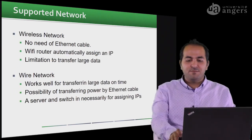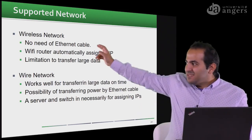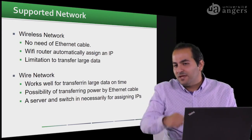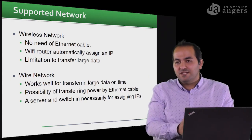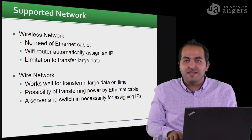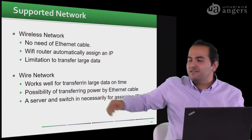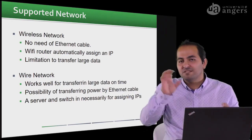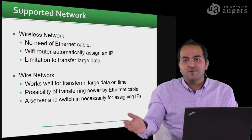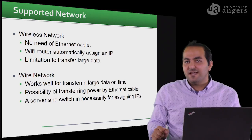Before going further, I want to briefly mention wireless versus wired network options for Raspberry Pi deployments. These are two approaches we can consider. If you have one, two, three, or up to ten Raspberry Pis in your greenhouse or growth chamber, you can use either wireless or wired network without any problem. However, if you are installing a hundred or two hundred Raspberry Pis with cameras and want to transfer data between them, you should be careful about your choice of network.